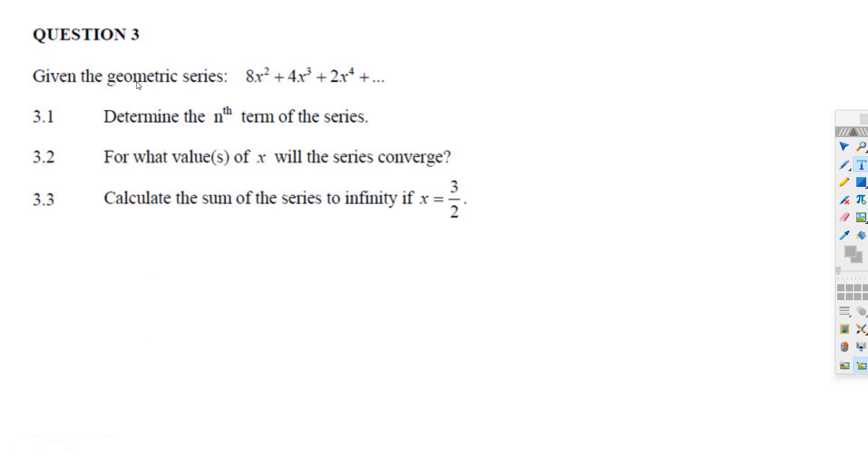This question here, it's a geometric series. They even tell you it's a geometric series, and you're looking at the first term. A is 8x squared. Now, if you want to find R in a geometric series, all you do is take two consecutive terms and divide. Well, 2 divided by 4 is a half, and x to the fourth divided by x cubed is just x. So it's half x or x over 2. That's what R is.